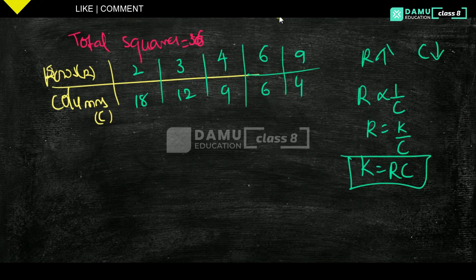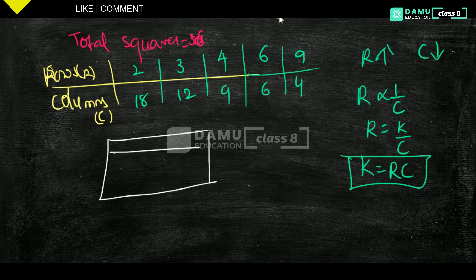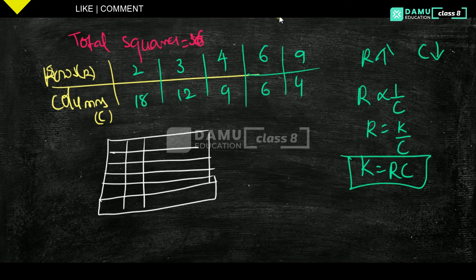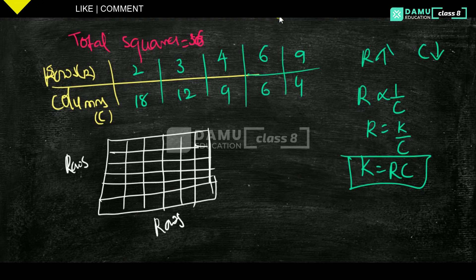Let's take the 6 into 6 example — draw like this: 1, 2, 3, 4, 5, 6 rows and 1, 2, 3, 4, 5, 6 columns. These are all rows and columns. Thanks for watching. Please subscribe.